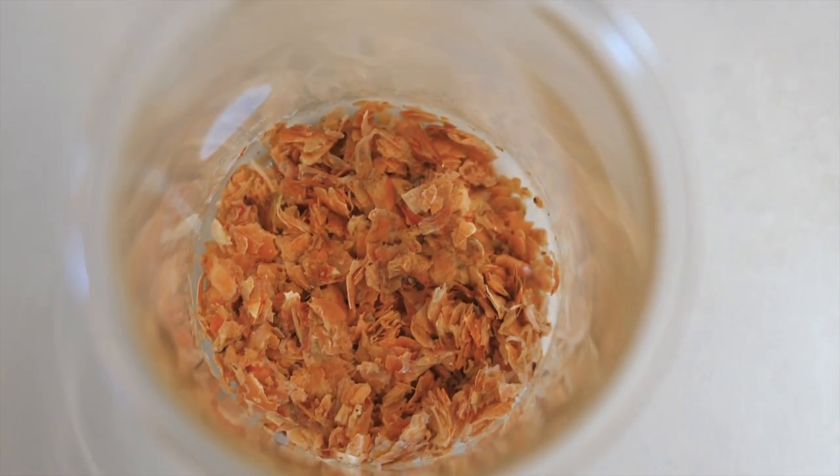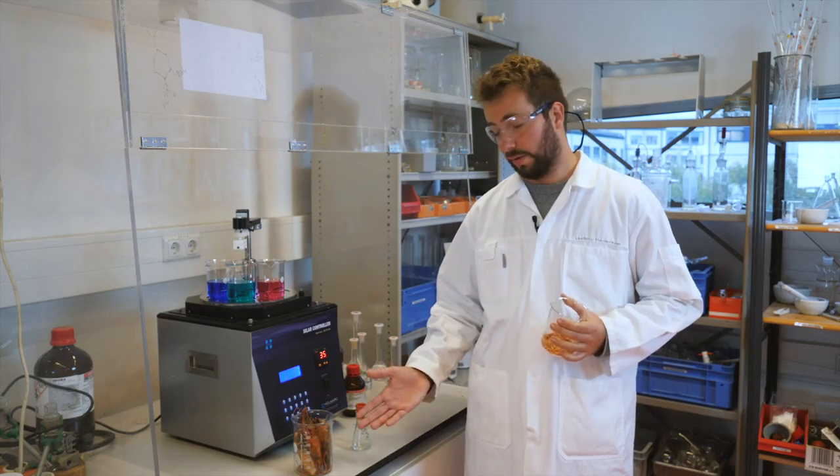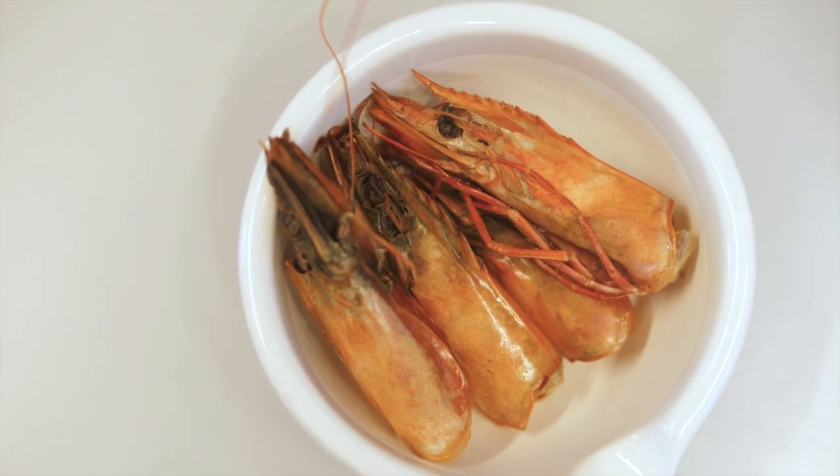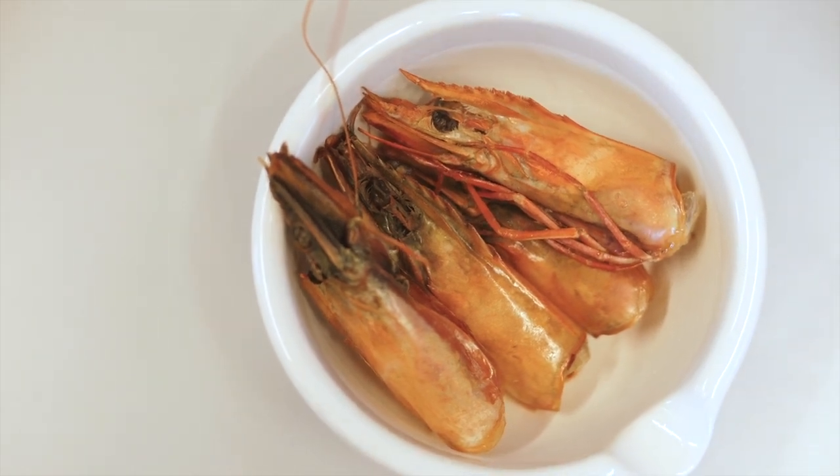Another possibility is a building block called chitin, which is found in the shells of shrimps. It has a function similar to lignin. It gives crustacean exoskeletons their strength.